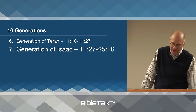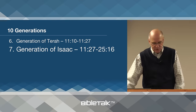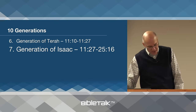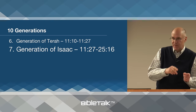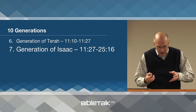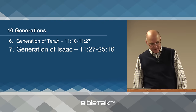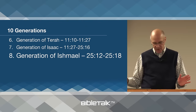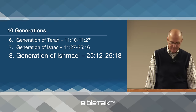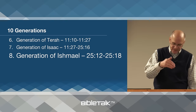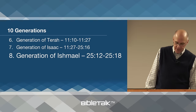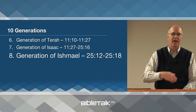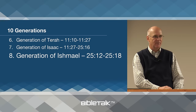The eighth is the generation of Ishmael, chapter twenty-five verse eleven to verse eighteen — where Isaac records his half-brother's lineage, giving you the Arab tribes. That's where the Arabs come from — they come from Ishmael. They had twelve tribes, just like the Jews had twelve tribes. The ninth is the generation of Jacob, chapter twenty-five verse nineteen all the way to chapter thirty-seven, where Jacob records the life of his father and also his own life. And then finally, number ten, the generation of the sons of Jacob.